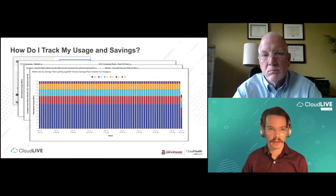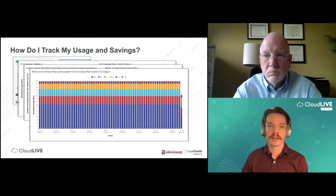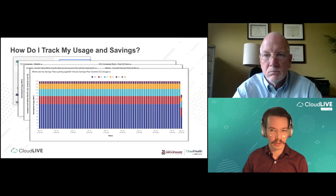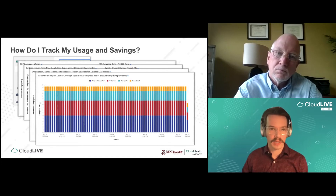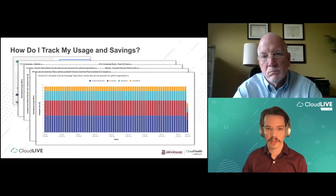Another report on the savings plan dashboard shows savings plans and where they're applied by instance family in an hourly view — each hour represented in two-hour blocks in CloudHealth. It shows where your savings plans are applied at any given time throughout about the last week. The last report is an EC2 compute costs hourly view showing different types of coverage on any given hour, similar to the first chart but in hourly format.